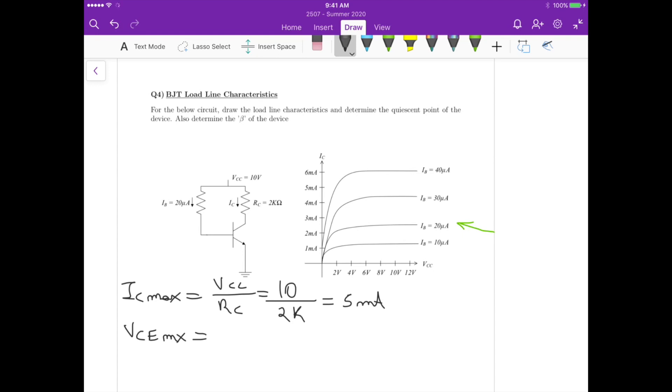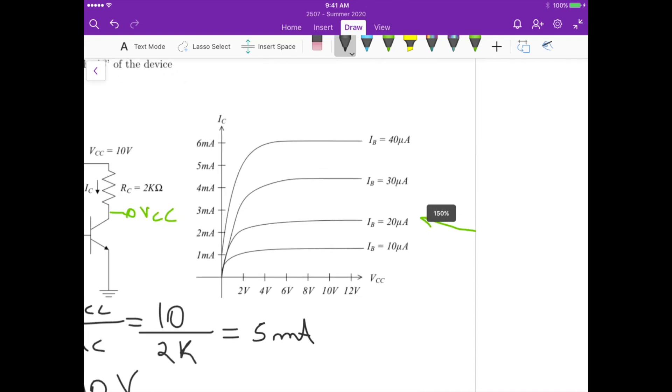Because then the collector current flowing right here is zero, so there is no voltage drop across RC. And then VC, the potential at this node here, is equal to VCC. In this case, it's the maximum voltage that we can have there. So VCE max is equal to 10 volts.